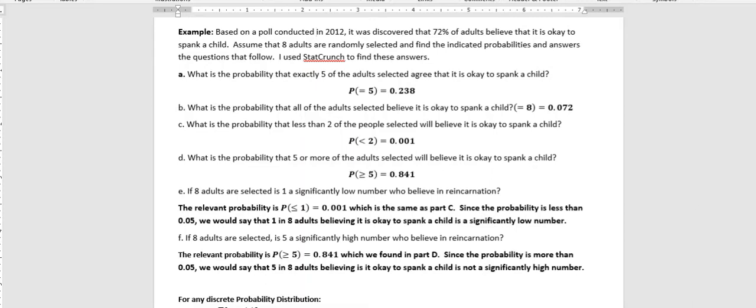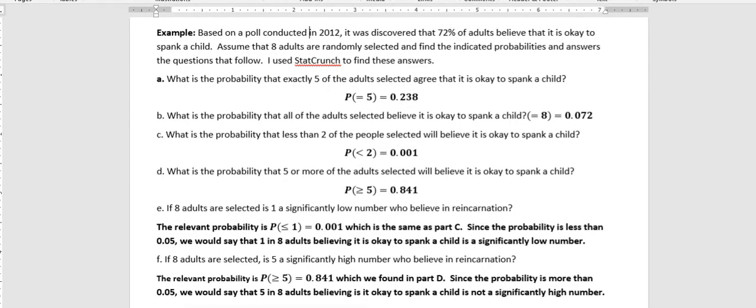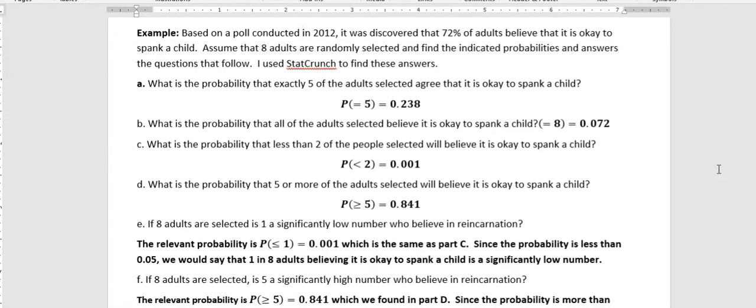Hi, it's Carly McAvoy. I want to give you an example concerning binomial distributions. Based on a poll conducted in 2012, it is discovered that 72% of adults believe that it is okay to spank a child. Assume that eight adults are randomly selected and find the indicated probabilities and answer the questions that follow.